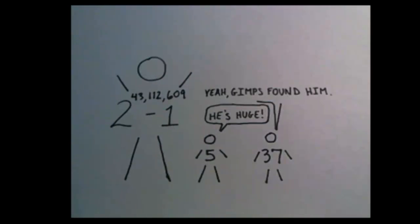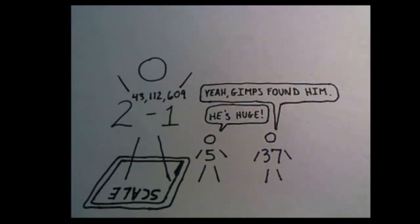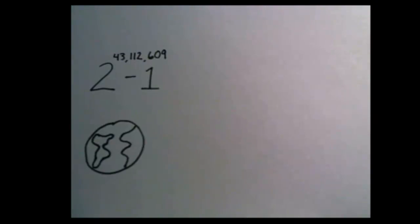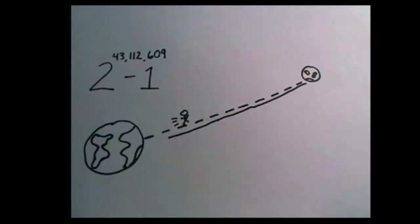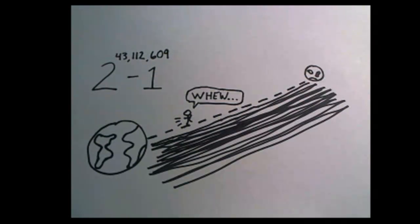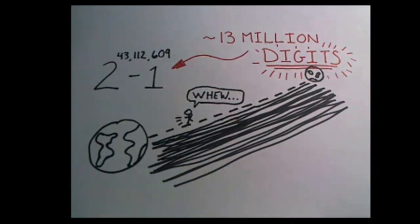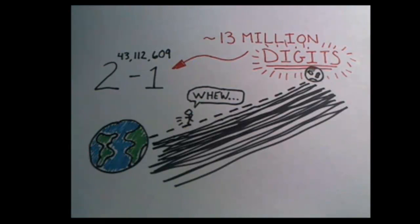the largest known prime number is 2 raised to the 43,112,609 minus 1. If we tried to comprehend this number by, say, taking this many steps between the Earth and the Moon, we'd walk from the Earth to the Moon and back a certain number of times that's just as incomprehensibly large. Put it this way, it has almost 13 million digits. That makes it pretty big.